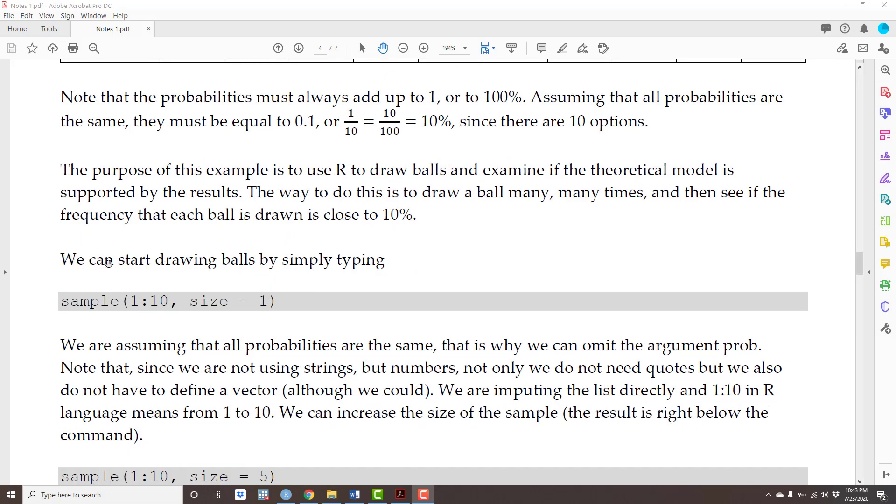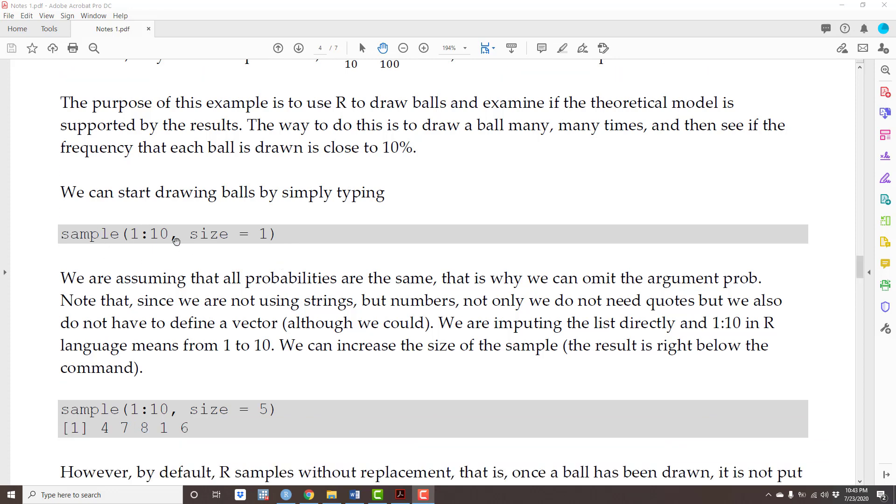Well, we can start by drawing a ball with a simple command: sample(1:10, size = 1). This is a little different than what we did before. Because we are assuming that all probabilities are the same, we can omit the argument prob. That's the default. R's default is if you omit, all probabilities are the same.